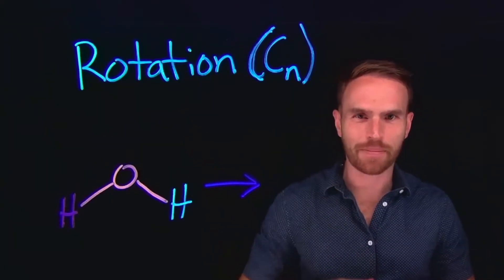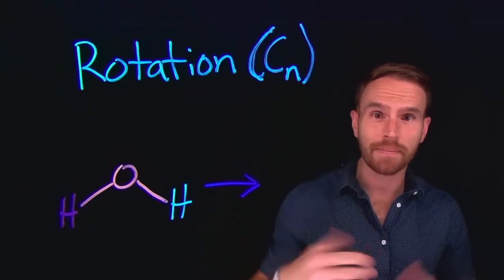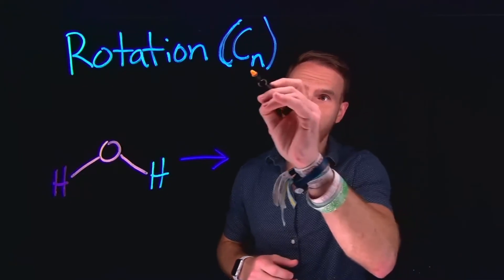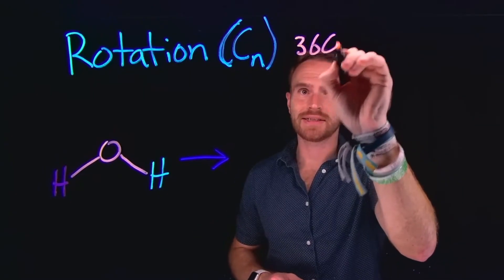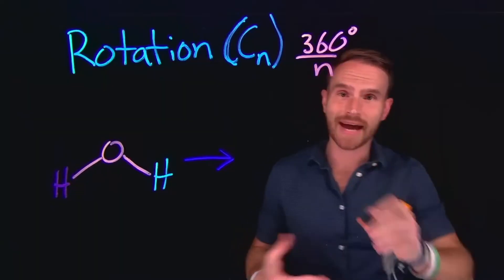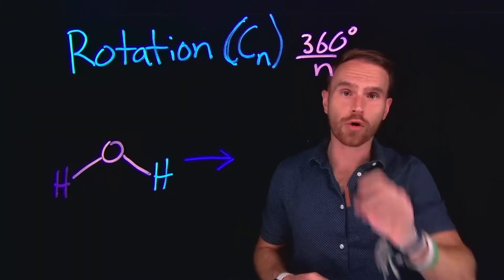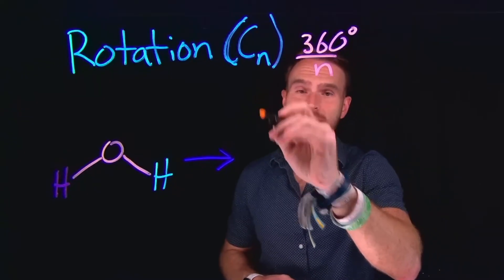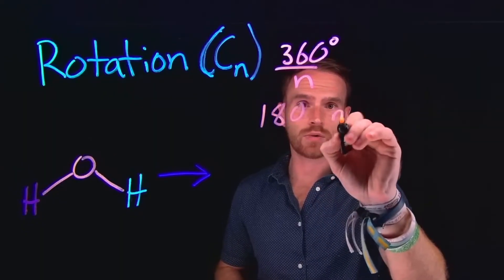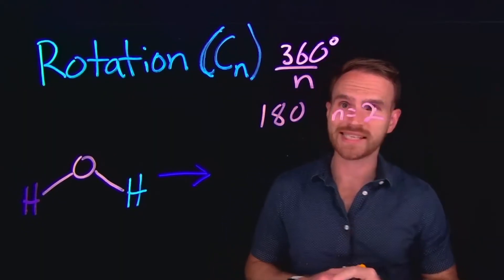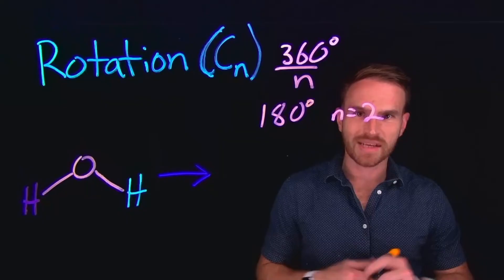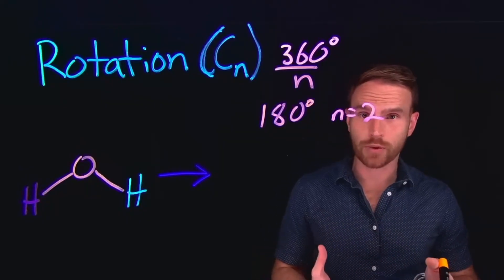Next up is the rotation operation, given the symbol capital C sub N. This involves rotating a molecule around a 360-degree circle divided by N. So 360 divided by N gives you the rotation angle. For example, if you needed to rotate something by 90 degrees, 360 divided by 4 is 90 degrees, which makes the C_N be C4. If we needed to rotate something by 180 degrees, N would equal 2 because 360 divided by 2 is 180 degrees, making it a C2 operation. Similarly, C3 would be a 120-degree rotation.